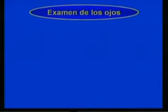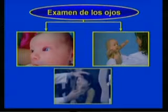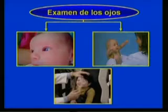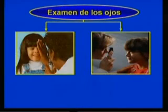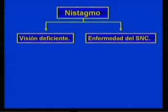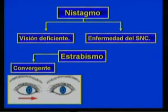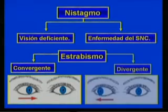Las técnicas para realizar el examen de los ojos en recién nacidos y lactantes, así como en la infancia temprana, se explican en su libro de texto. En los escolares y adolescentes se utilizan los mismos métodos que en los adultos. El nistagmo es sugestivo de visión deficiente o enfermedad del sistema nervioso central. Durante los primeros meses de edad, algunos lactantes mantienen los ojos cruzados de manera intermitente, lo que se conoce como estrabismo convergente. Otros los desvían a los lados de forma intermitente, a lo cual se le llama estrabismo divergente.